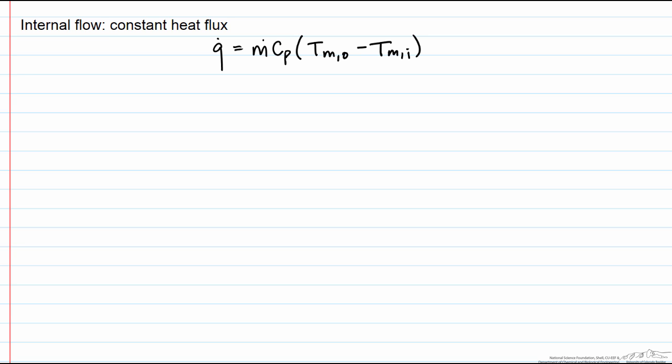We can use other expressions for certain situations such as constant surface heat flux, and we use Newton's law of cooling, which is HA delta T equals Q, to relate Q to the surface temperature at the outlet and the inlet.